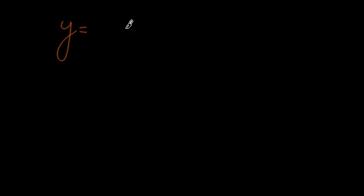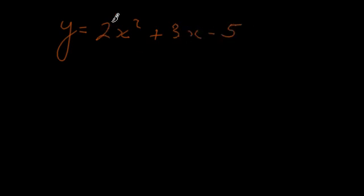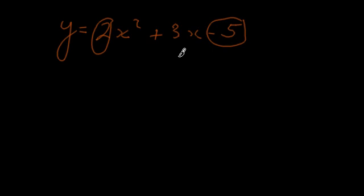y is equal to 2x squared plus 3x minus 5. You'll notice that we have a constant term in front of the x squared here, and that makes things a little bit different. The first thing I do in these types of questions is I take the first term and the last term and multiply them together, which gives us minus 10.